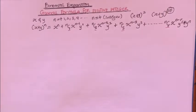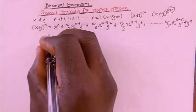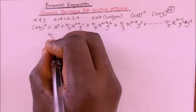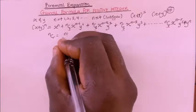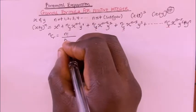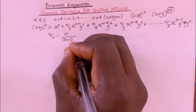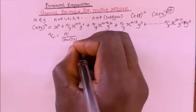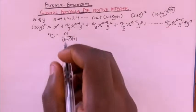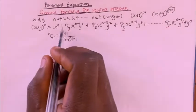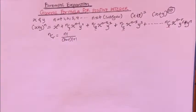Don't forget that as far as the combinatorial expression is concerned, whenever we have nCr, it is simply n factorial divided by n minus r factorial times r factorial. Now I'm going to use this expression to simplify the formula.